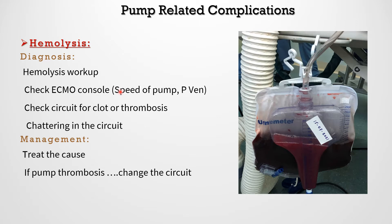To diagnose hemolysis, first perform a lab workup including reticulocyte count, LDH, total bilirubin, and indirect bilirubin. Then check ECMO control — the pump speed and negative pressure — and inspect the circuit for clots, thrombus, or chattering in the venous line, which may indicate hypovolemia. Treatment involves addressing the underlying cause. If the cause is pump thrombosis, we change the circuit. This image is from a real patient in my unit showing oxygenator thrombosis, at which time we changed the circuit.